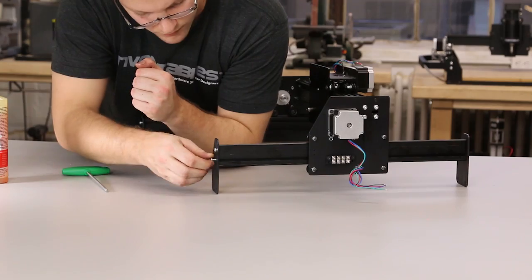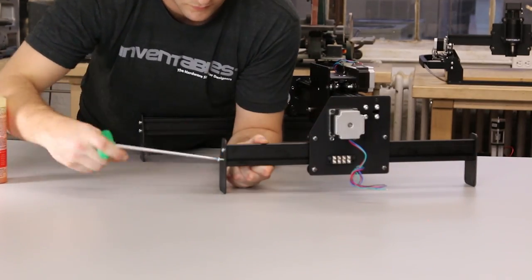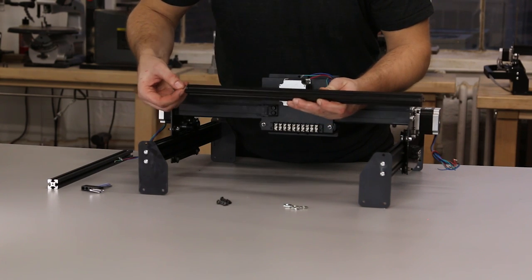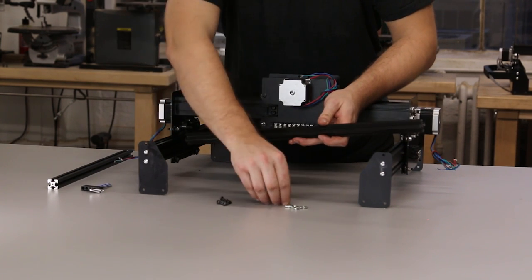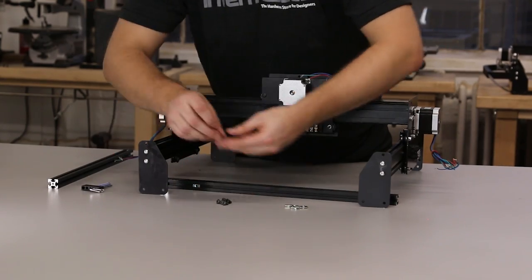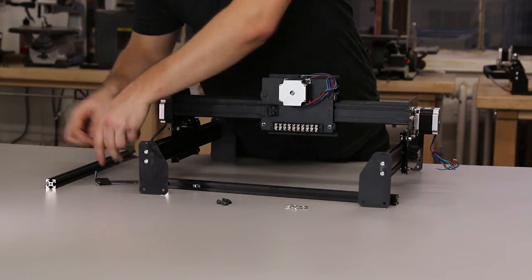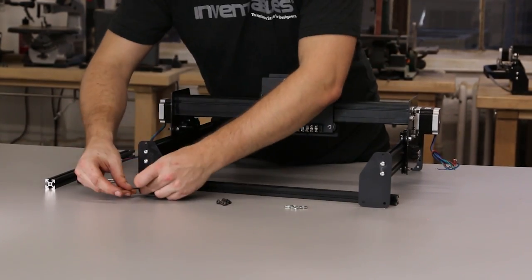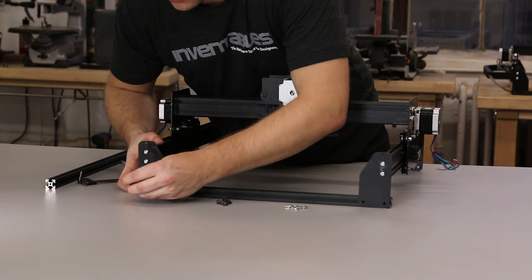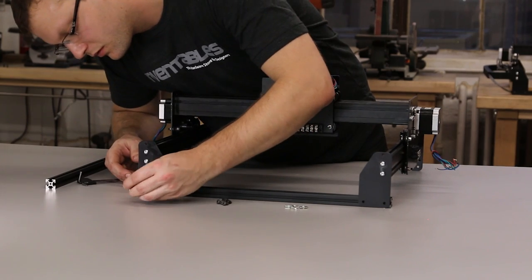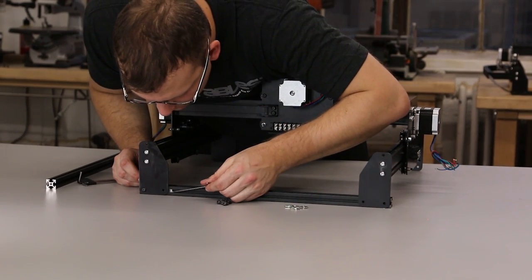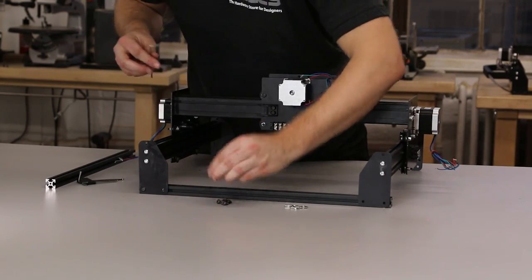Now we're going to connect the two Y-axis maker slides with extrusion. You're going to put two insertion nuts per side into this extrusion, and then attach the extrusion to the end plates with small screws. There will be a total of four insertion nuts for each extrusion.